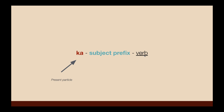So, the structure is: verb = subject prefix, and then 'ka' in the very beginning of the verb. Ka is the present particle.